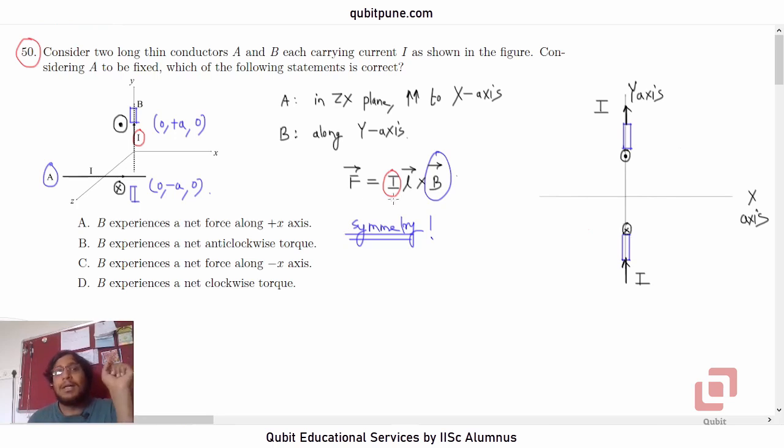Now, the I L bar quantity, the current element vector, its direction will always be along positive y. Yes, the only thing that is changing its direction is the magnetic field. So it has now fixed that it will be torque. But now I have to determine whether it is clockwise torque or anticlockwise torque. And to calculate it, we must calculate the direction of the force.